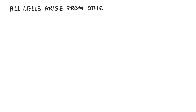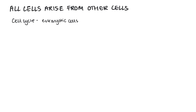Topic 2.2: all cells arise from other cells. Not all cells in multicellular eukaryotic organisms keep their ability to divide, but eukaryotic cells that do retain their ability to divide show a cell cycle.